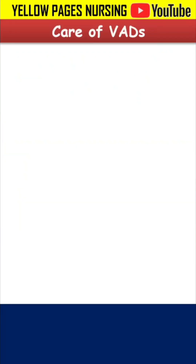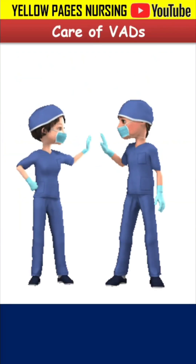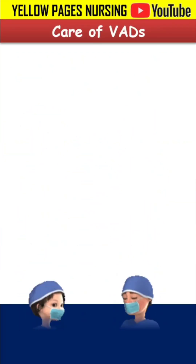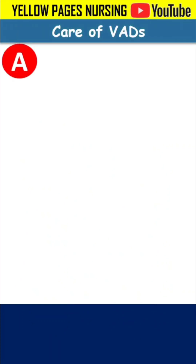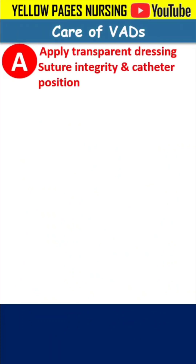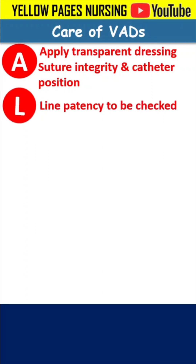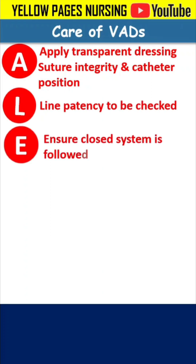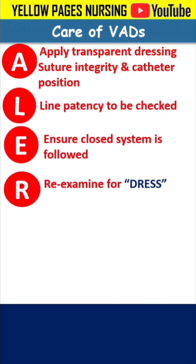Care of vascular access devices includes the ALERT acronym. A stands for Apply Transparent Dressing, Suture Integrity, and Catheter Position. L is for Line Pattern to be checked. E is for Ensure Closed System is followed. R is for Re-examine for Dress, that is Discharge.